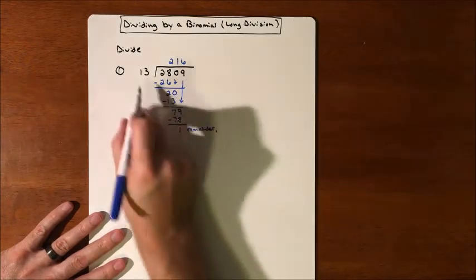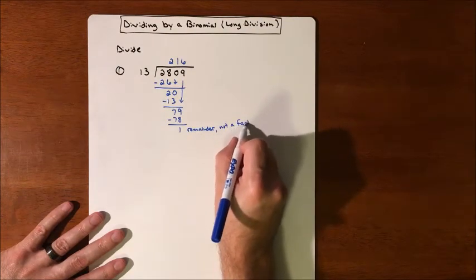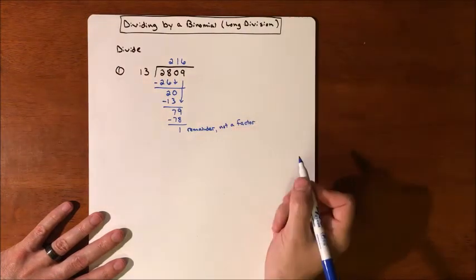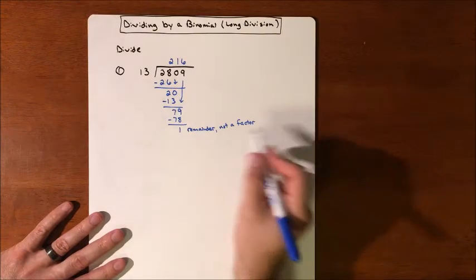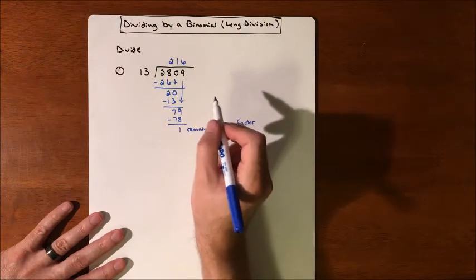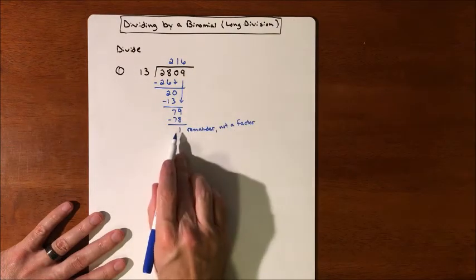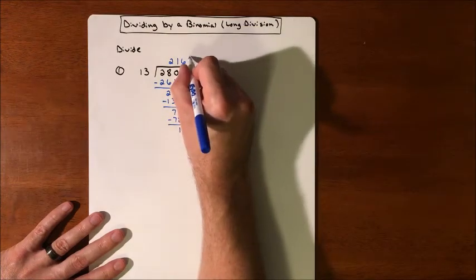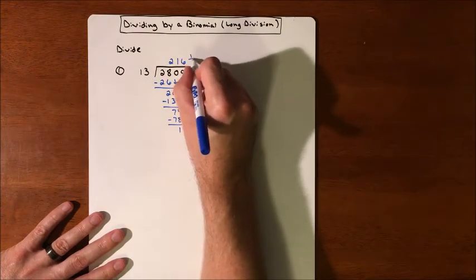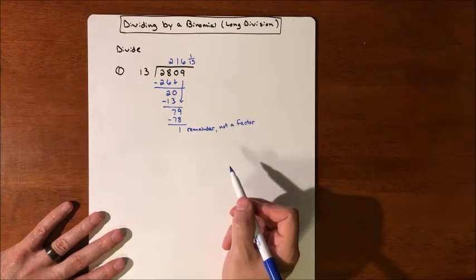Since we have a remainder, that tells us that 13 is not a factor, because it doesn't divide into it evenly. So how do we write our remainder? We could put R1, or we could add decimals and keep going. But we don't need to. We're just going to stop with this, and it's 216 and 1/13. That is our answer.